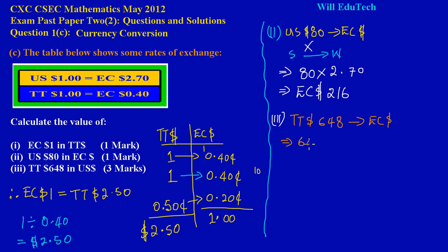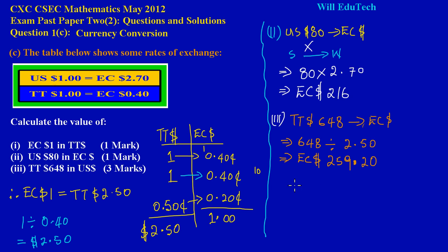Step A: Take TT$648 and divide by 2.50 (since from part one we found EC$1 = TT$2.50, meaning it takes $2.50 Trinidadian to purchase one Eastern Caribbean dollar). So 648 ÷ 2.50 = EC$259.20. Now I need to convert this EC amount to US dollars.